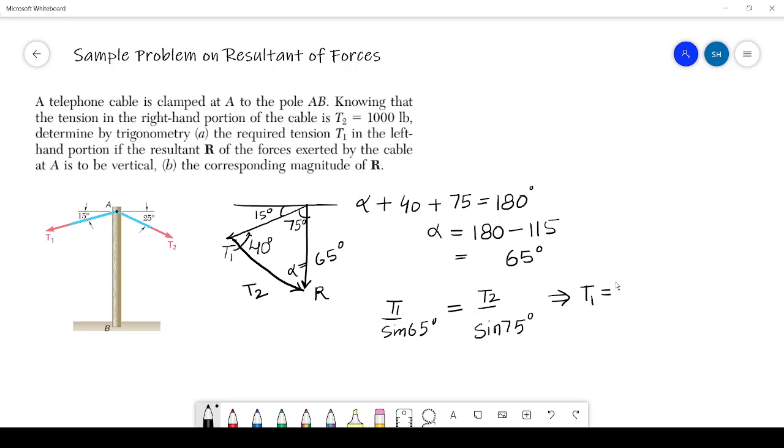Which will be equals to T2 and the sine of 65 divided by sine of 75. And this T2 is equals to 1000 pounds.